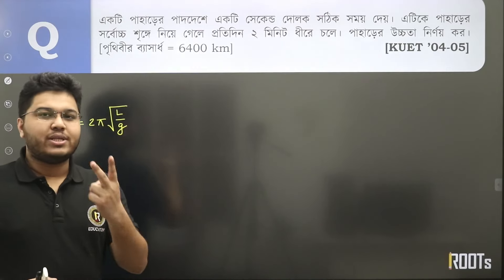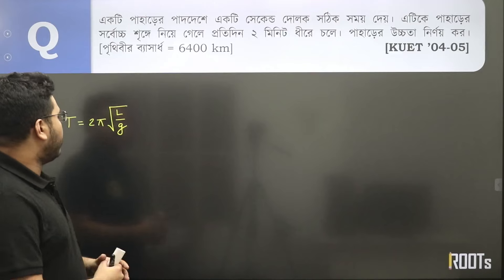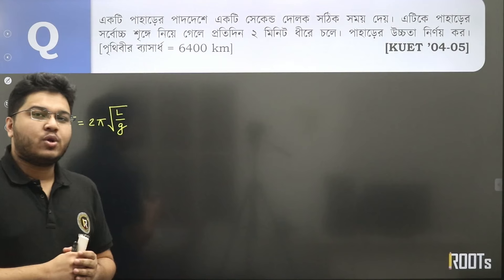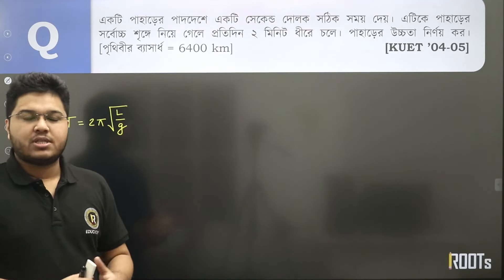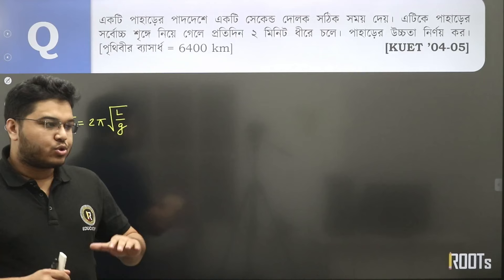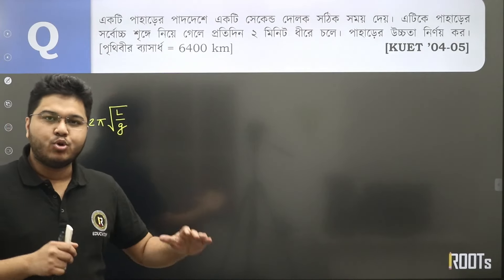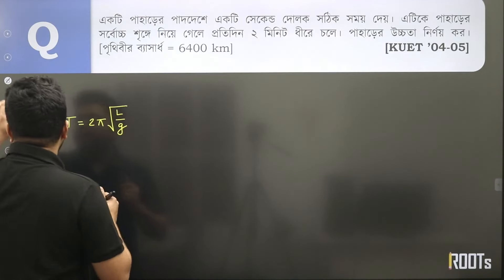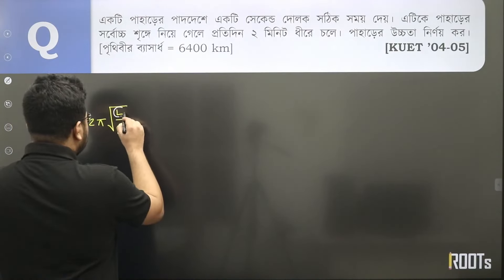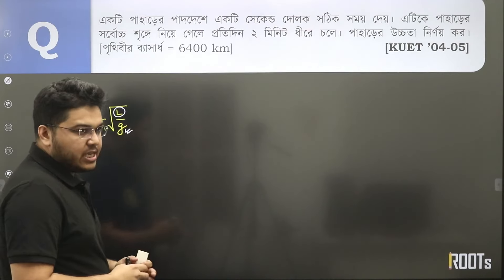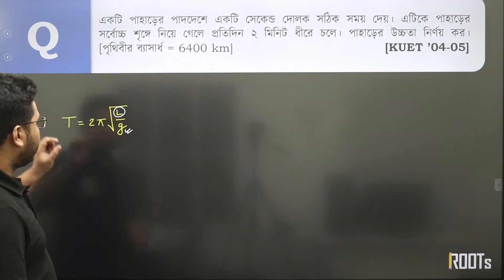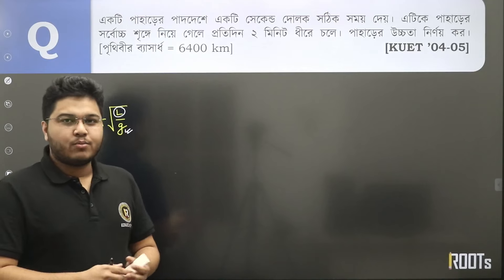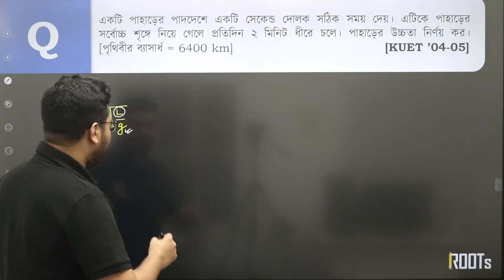দোলক দোলন কাল আসলে দুইটা ভেরিয়েবলের উপর ডিপেন্ড করে। একটা হচ্ছে তার কার্যকরী দৈর্ঘ্য ঠিক রেখে জাস্ট আমাদের এই যে L, যেটা সেটা পরিবর্তন হবে না। আমাদের পরিবর্তন হবে শুধুমাত্র g তালে, যের পরিবর্তনের জন্য আমাদের দোলন কাল।